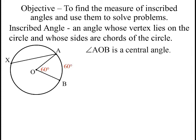But an inscribed angle is when the vertex lies on the circle somewhere. Vertex X could lie anywhere on the circle, and then you would get this angle AXB, which is called an inscribed angle.